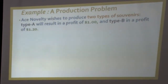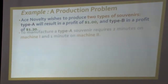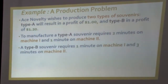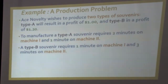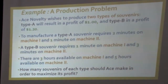This is a production problem. A novelty firm wishes to produce two types of souvenirs: Type A will result in a profit of $1 and Type B in a profit of $1.20. To manufacture a Type A souvenir requires 2 minutes on machine 1 and 1 minute on machine 2. A Type B souvenir requires 1 minute on machine 1 and 3 minutes on machine 2. There are 3 hours available on machine 1 and 5 hours available on machine 2. How many souvenirs of each type should the firm make in order to maximize its profit?